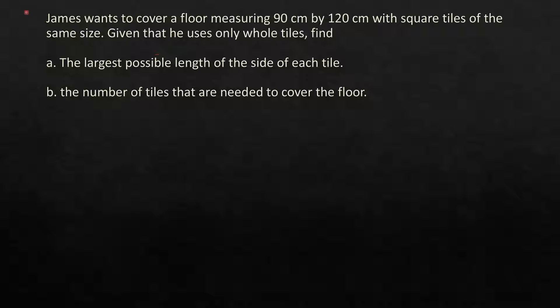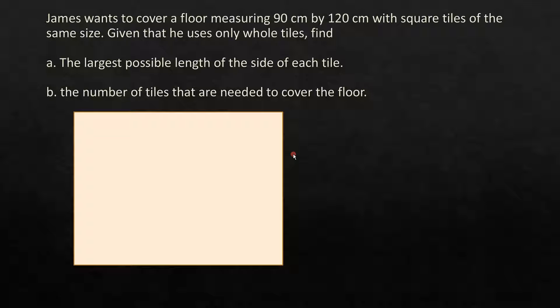James wants to cover a floor measuring 90 cm by 120 cm with square tiles of the same size. Given that he uses only whole tiles, find the largest possible length of the side of each tile and the number of tiles that are needed to cover the floor. So let's assume that this is the floor area given as 90 cm by 120 cm. So this is 90 cm and this is 120 cm.